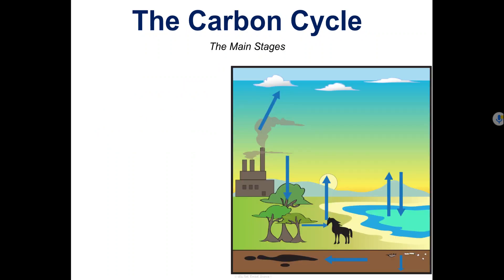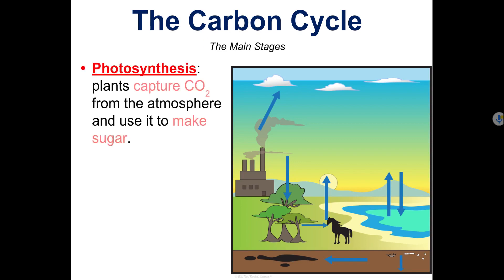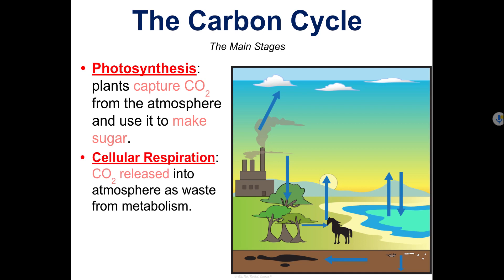Now we want to talk about the main stages of the carbon cycle. Let's begin with photosynthesis. During photosynthesis, plants capture carbon dioxide from the atmosphere and they use it to make sugar. Next is cellular respiration. During cellular respiration, carbon dioxide is released into the atmosphere as waste from metabolism.